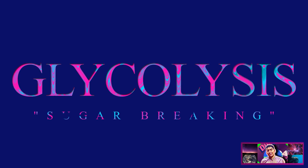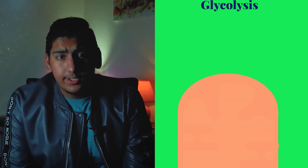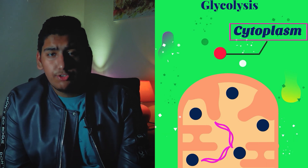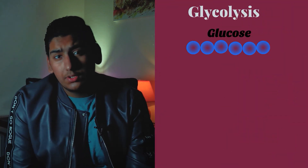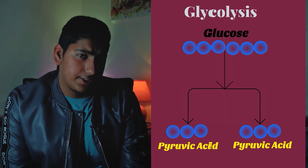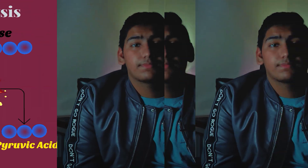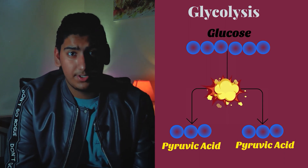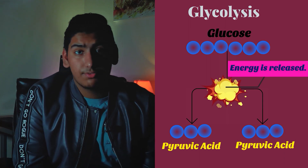The first set of reactions in cellular respiration is called glycolysis, which literally means sugar breaking. Glycolysis takes place in the cytoplasm. It transforms a molecule of glucose into two molecules of pyruvic acid. As the bonds in glucose are broken and rearranged, energy is released.